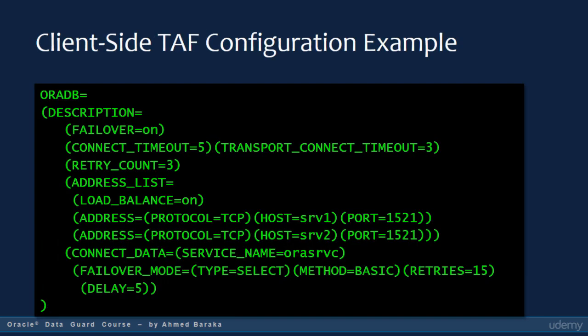The slide shows an example of configuring TAF in the tnsnames.ora file. In this example, if the client fails over, the current select statement will hang while the client tries to connect to the database service on the second host. If that connection succeeds, it will rerun the select statement and fetch remaining rows. At login time, the client will have a single session connected to the database service. If connecting to the other host fails, the client will wait 5 seconds before trying again, and it keeps trying for 15 times.